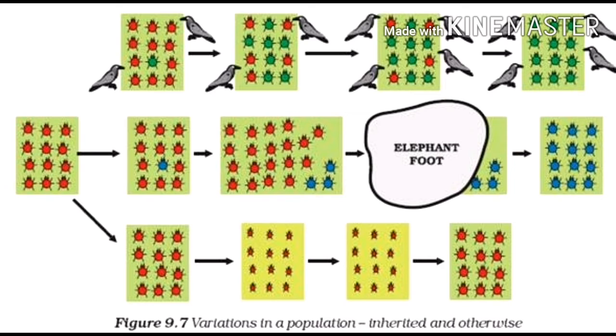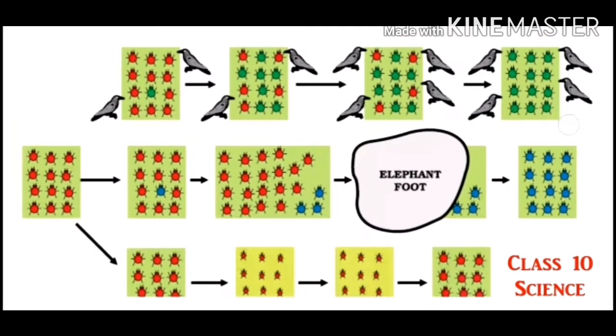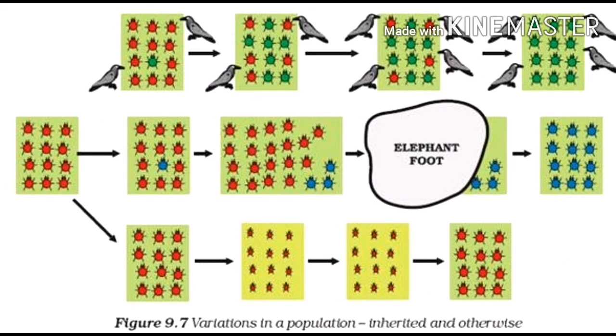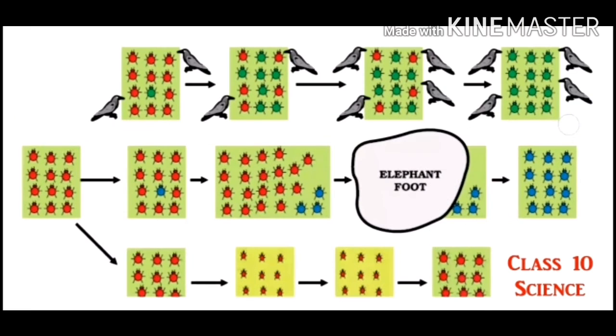Here you can see this is the diagram of a beetle population. In the population of red beetles, a green beetle appears due to color variation during sexual reproduction. The green body color is heritable and has survival advantage.